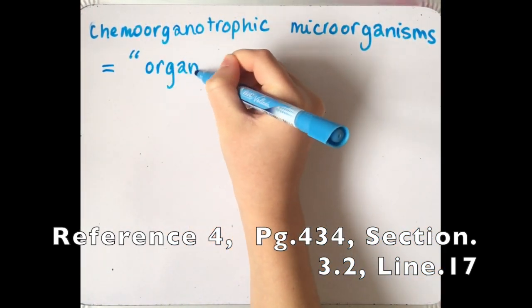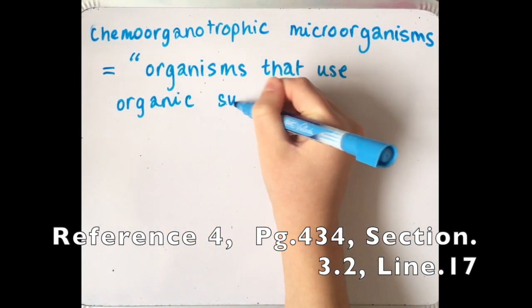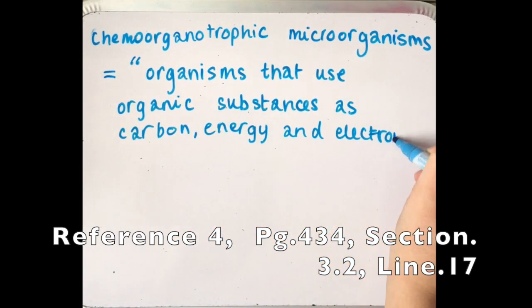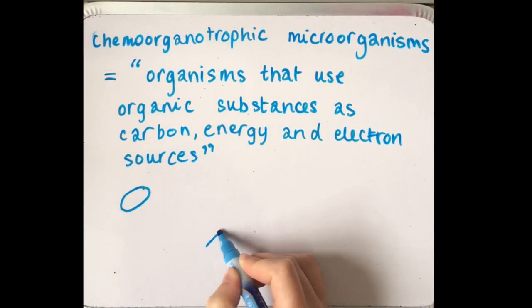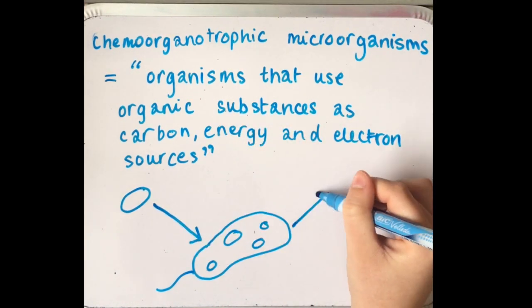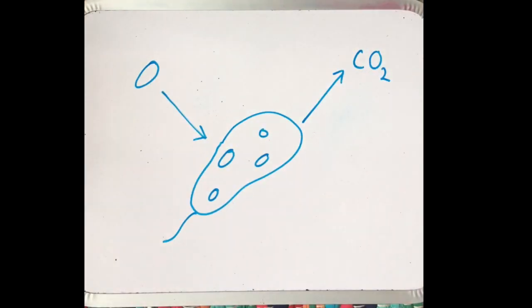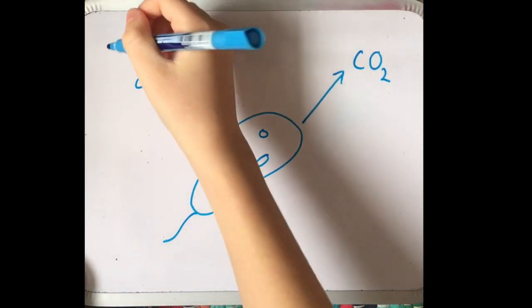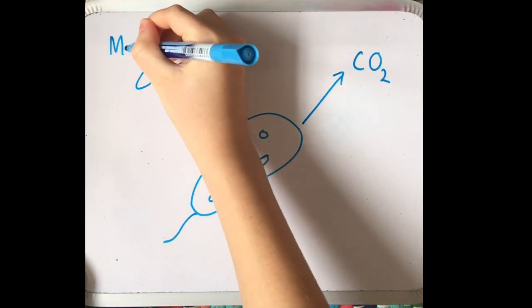Chemoorganotrophic microorganisms are organisms that use organic substances as carbon, energy, and electron sources. These organisms can assimilate organic molecules and break them down into carbon dioxide and other molecules. But in order to assimilate a polymer, the chain length must be small.